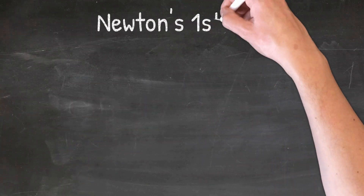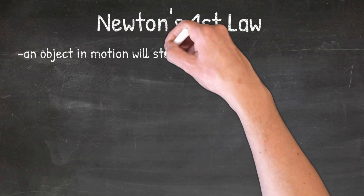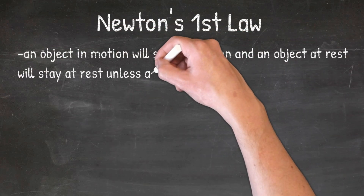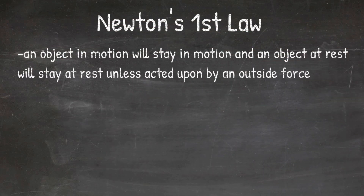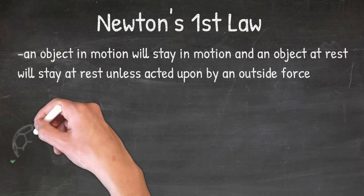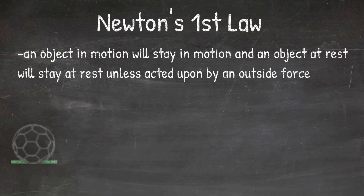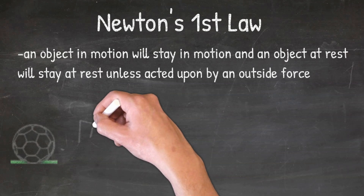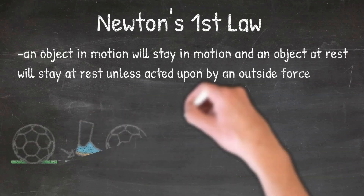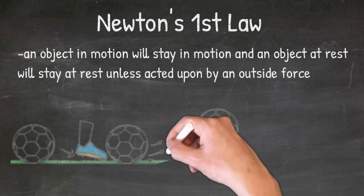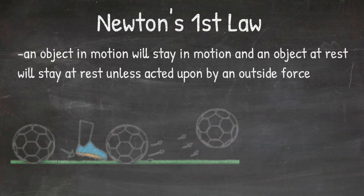Newton's first law of motion states that an object in motion will stay in motion, and an object at rest will stay at rest unless acted upon by an outside force. In other words, if a soccer ball is sitting on the ground not moving, the only way it will start moving is if an outside force acts upon it. An example would be kicking the soccer ball — when it is kicked, a force is applied and the soccer ball starts moving.